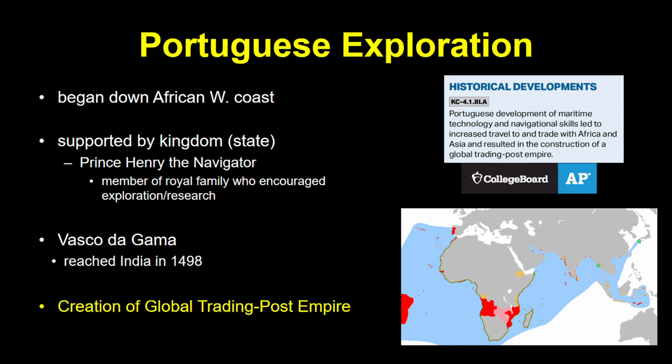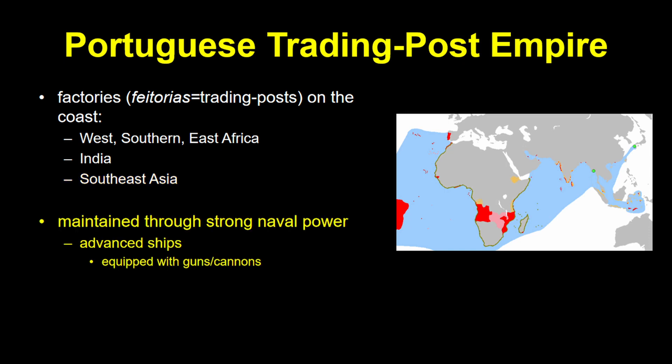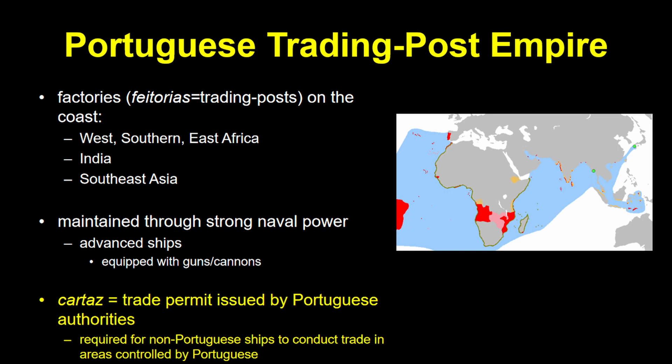Along the way, the Portuguese had developed a trading post empire made of a series of what were called factories — all along the coast of West, Southern, and East Africa, the Middle East, India, and Southeast Asia. The Portuguese were setting up factories and engaging in trade, and often warfare. They used their advantages in ship design and cannon technology to blast their way into many of these places, and they used their naval power to establish a monopoly over the spice trade, which they enforced with the cartaz system. Any ship that didn't have a cartaz would face serious consequences.